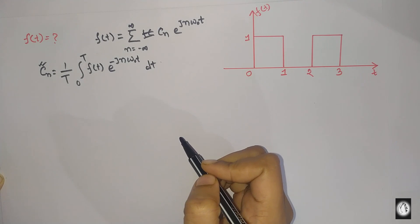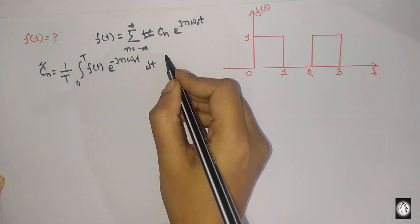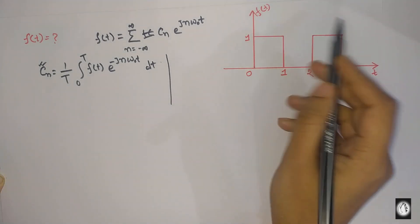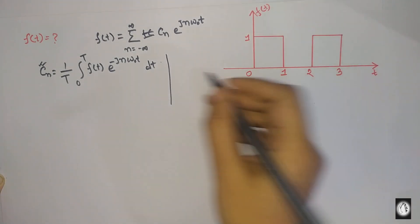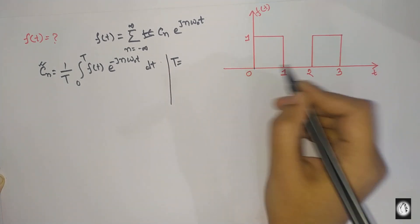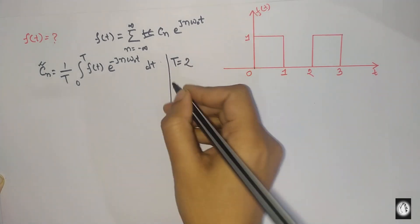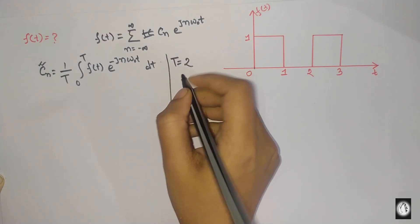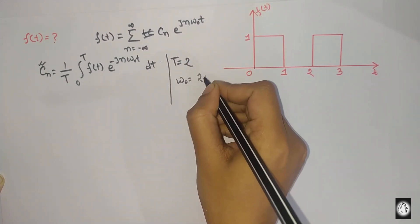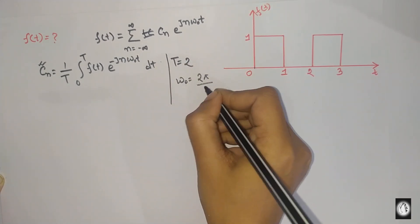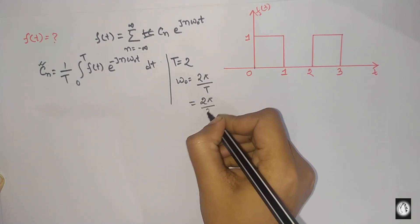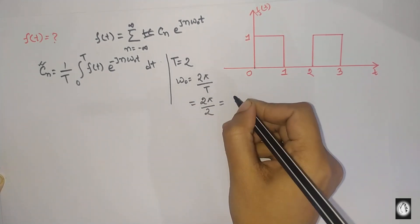The time period is from 0 to 2, so T equals 2. Therefore ω₀ is equal to 2π divided by T, which gives 2π over 2, equal to π.